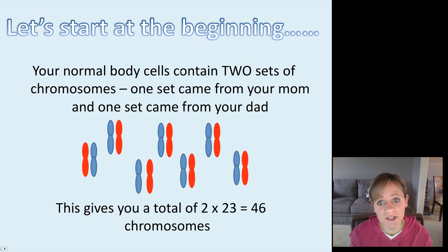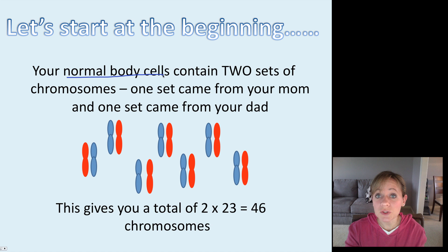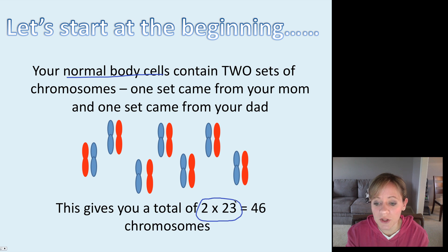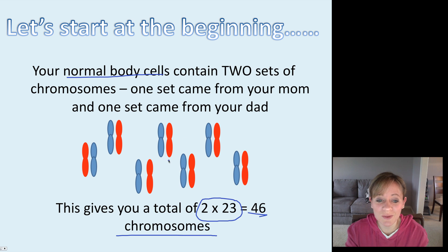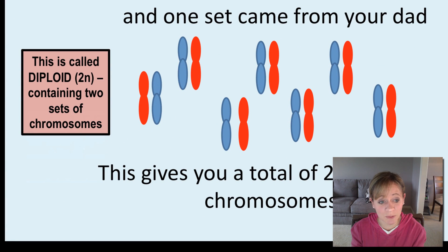Let's start at the very beginning of the process of meiosis. These ovarian cells or testes cells — these normal body cells — contain two sets of chromosomes. One set came from the mom and one set came from your dad. This gives you 2 times 23 chromosomes, so you've got 23 pairs of chromosomes, which is a total of 46. In the diagram I'm showing just seven pairs — so 14 chromosomes total — where the red came from mom and the blue came from dad. This is diploid, 2N, because you've got two full sets of chromosomes.